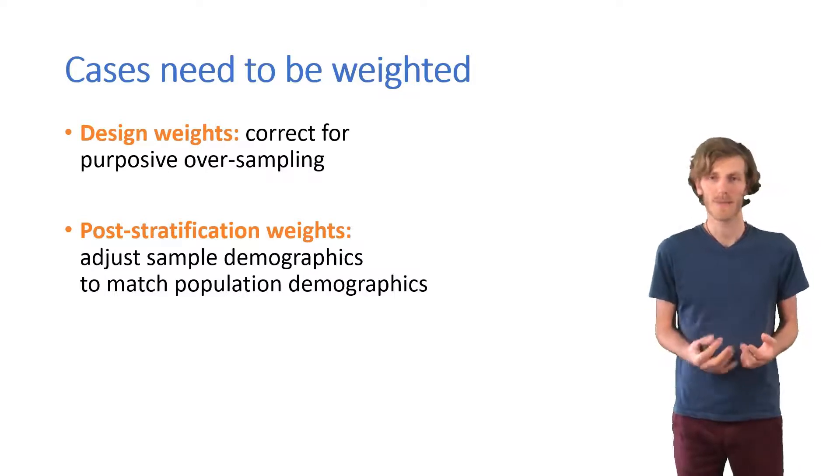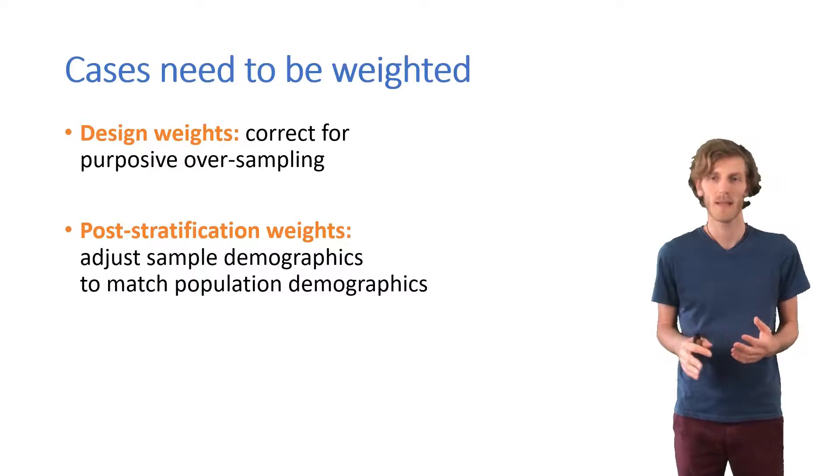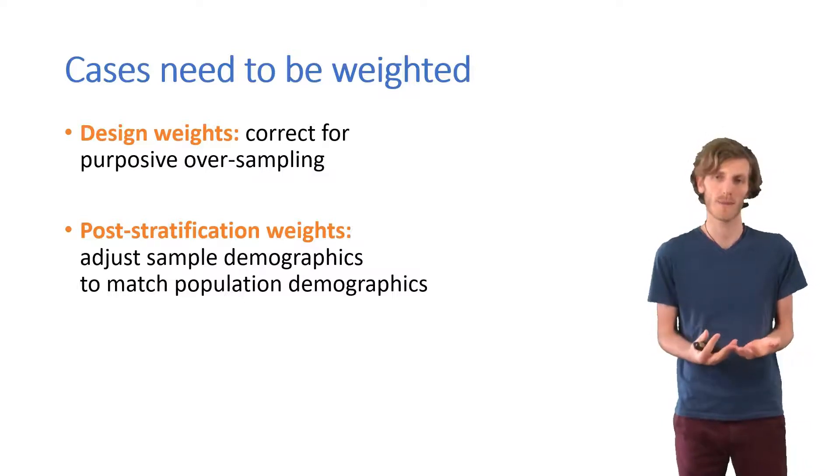So there are very quickly many, many variables that we could use to calculate post-stratification weights. If we use too many variables, we can just introduce a lot of noise into our data. But the notion of post-stratification weights is that we want to make our sample look more like the population by giving stronger weight to underrepresented groups, lower weight to overrepresented groups.